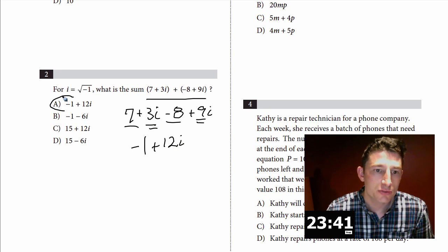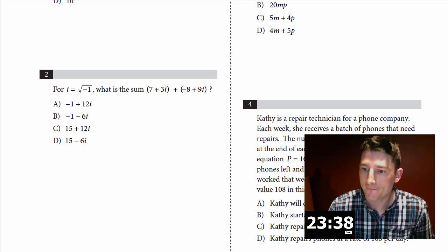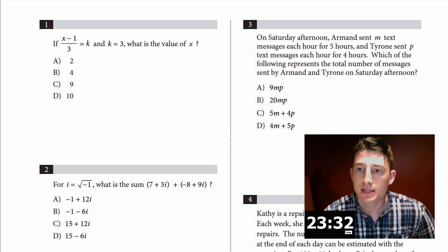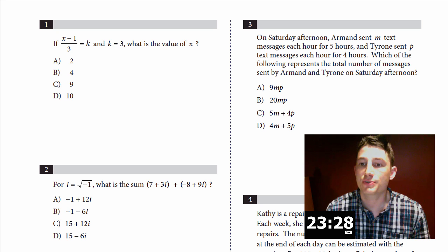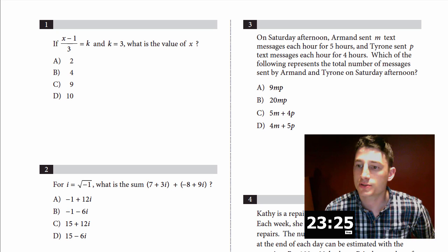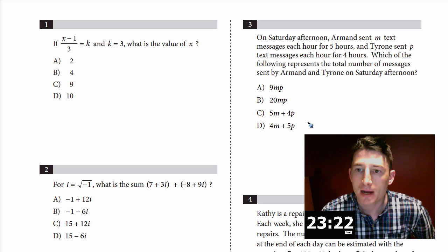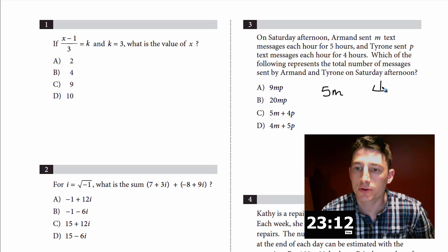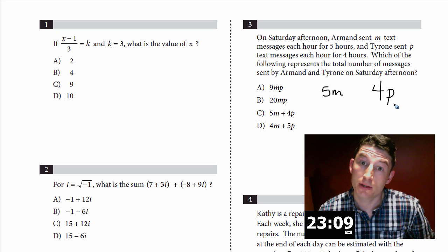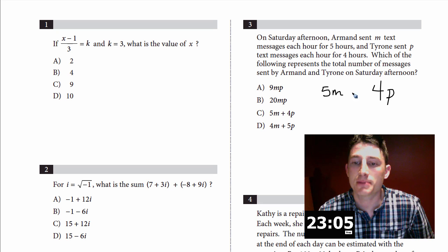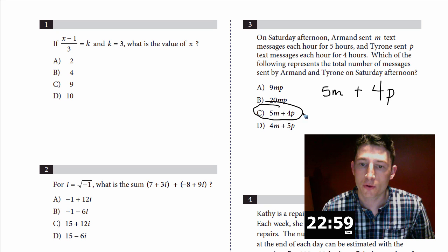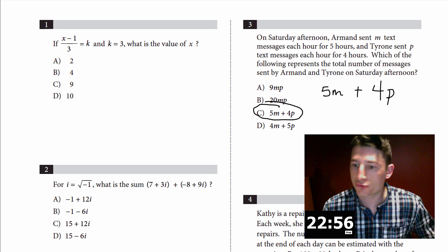Number three: On Saturday afternoon Armand sent M text messages each hour for five hours and Tyrone sent P text messages each hour for four hours. Let me write those down. Armand sent M text messages for five hours, so he sent 5M. And Tyrone sent P text messages for four hours, that's 4P. Which of the following represents the total number of messages sent by these two guys? Well hopefully you put that together, it's just 5M and 4P.